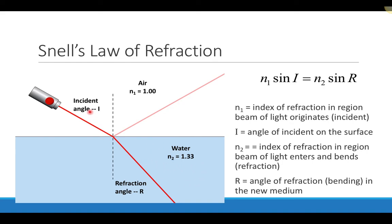It turns out that there is a relationship between the angle of incidence I, the angle of refraction R, and the indices of refraction in each of the different regions. That relationship is defined by Snell's Law, which states that the index of refraction for the incident region times sine of the incident angle must equal the index of refraction in the region of refraction times sine of the refracted angle. The use of sine here just means we use the sine function in our calculator.